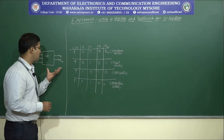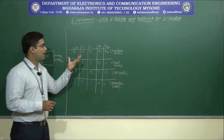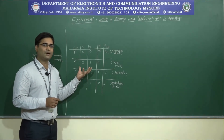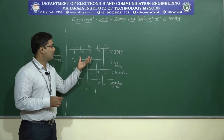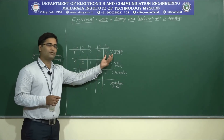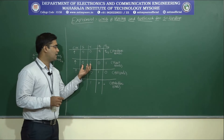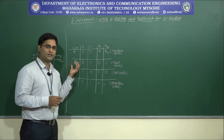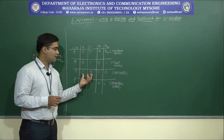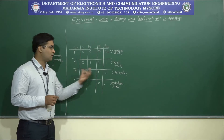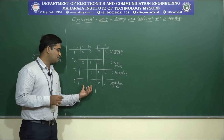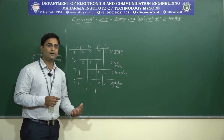This is the block diagram of the SR flip-flop and the truth table shows how the states work. When S=0 and R=0 at the positive edge of the clock, the output is in the previous state. When S=0 and R=1, the output is in reset state. When S=1 and R=0, the output is in set state. When S=1 and R=1, the output is in the forbidden state.